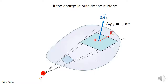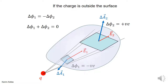The contribution to the flux through this surface and this surface have the same value as a number, but one is positive and one is negative, so when you add them, you get zero. So that's the difference when the charge is outside the surface — one contribution is negative, one contribution is positive, and they're exactly the same value. So the total flux through these two elements of area cancel out, giving a total of zero.